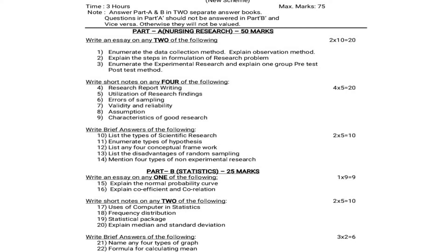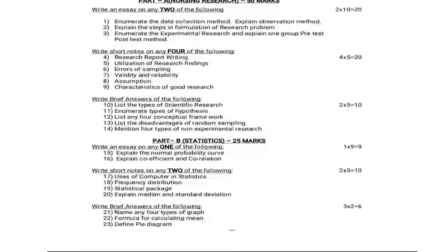Moving on to Part B, which is Statistics, for 25 marks. It also has essay, short note, and brief answer sections. In the essay section, they give 2 questions and you answer only 1, for 1 into 9 equals 9 marks. Question 15: Explain the normal probability curve. Question 16: Explain the coefficient of correlation. We have covered both these topics in our channel playlist for Nursing Research and Statistics.